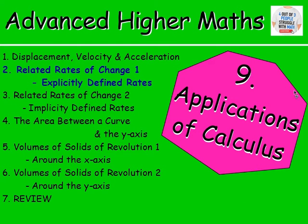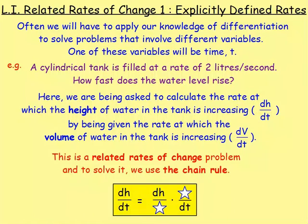After that, we went on to look at related rates of change. First of all, we looked at explicitly defined rates. A lot of the time, if you have a problem to do with differentiation, you may find that there are different variables, and one of those will be time. For example, a cylindrical tank is being filled at a rate of 2 litres per second — so we are given dV/dt. What we want to do is work out how fast the water level is rising, so we want dh/dt.